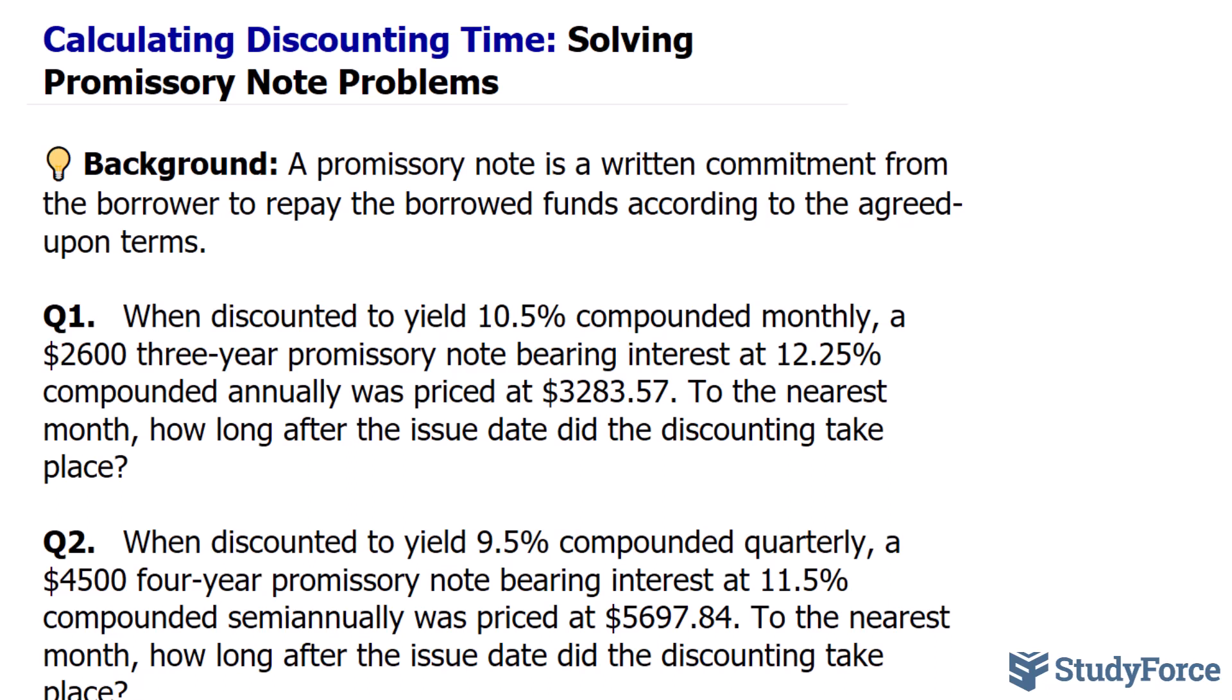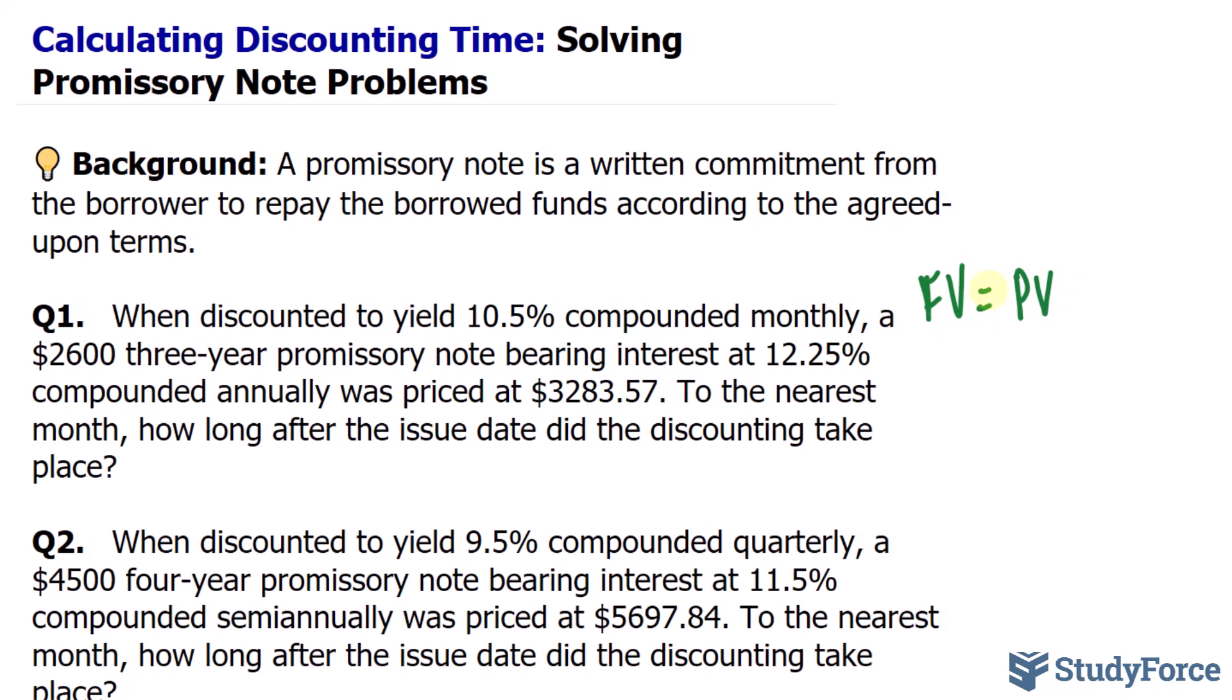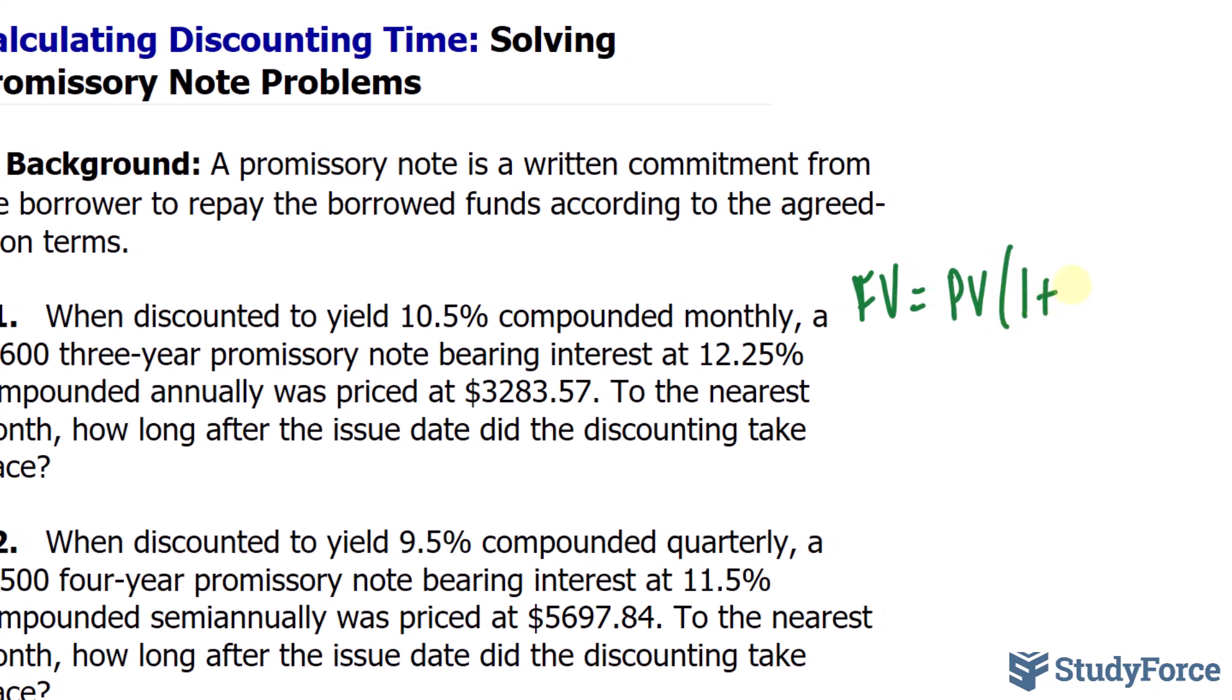We'll use the future value formula for compound interest. The future value formula goes like this: FV is equal to PV. So the future value is equal to the present value multiplied by 1 plus the interest rate raised to the power of N, which represents the number of periods.